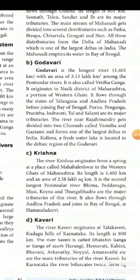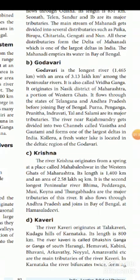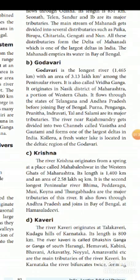The drainage system of India is broadly divided into two major groups: Himalayan rivers and peninsular rivers. Himalayan rivers are found in North India and originate from the Himalayas — they are perennial rivers. Rivers in South India are called peninsular rivers.